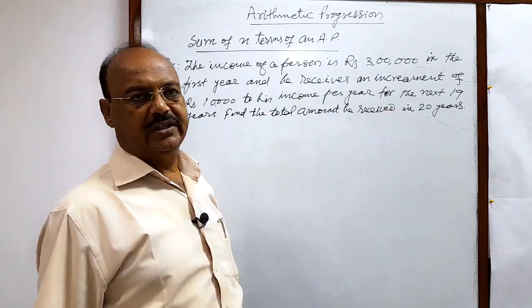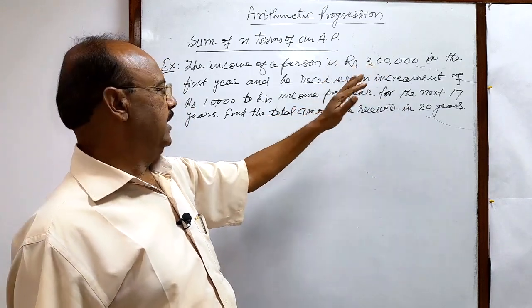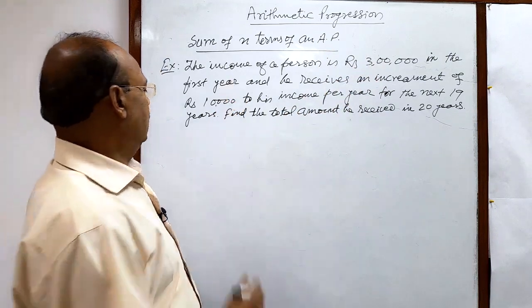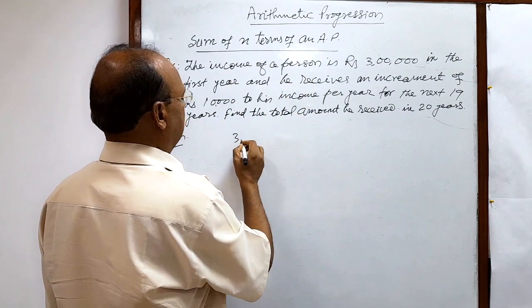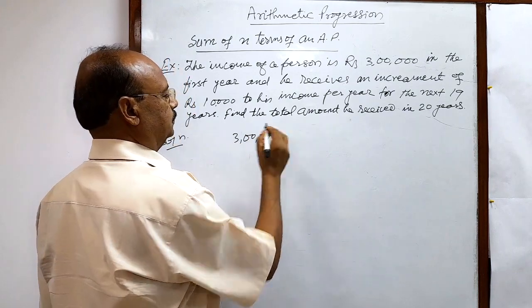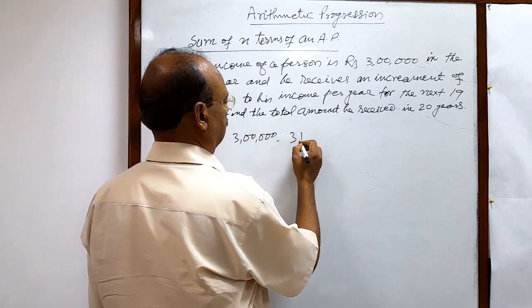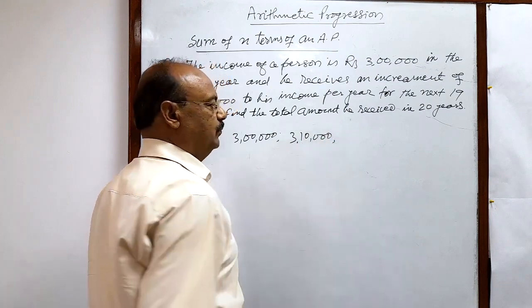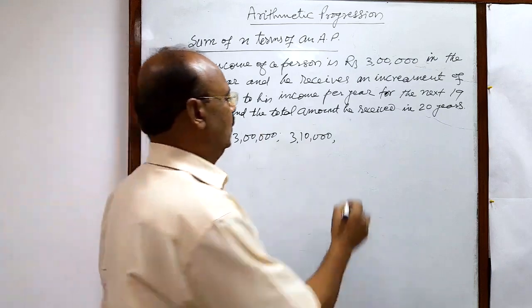So first year income is 3 lakhs and every year it has been increased by 10,000. The incomes are: first year is 3 lakhs, then 3 lakhs 10,000, then 3 lakhs 20,000, increment of 10,000.